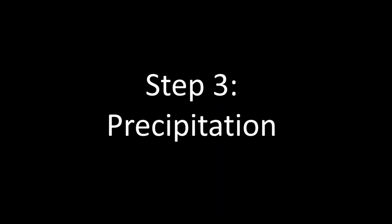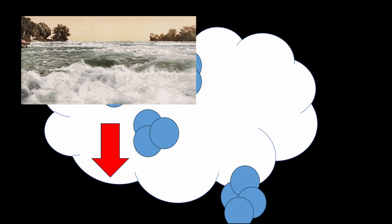Step 3: Precipitation. Within these clouds, water droplets continue to collide and combine with each other, growing larger and heavier. Eventually, these droplets become too heavy to stay suspended in the air, and gravity pulls them down as precipitation. That's why we don't have the whole contents of the cloud falling down on us all at once.